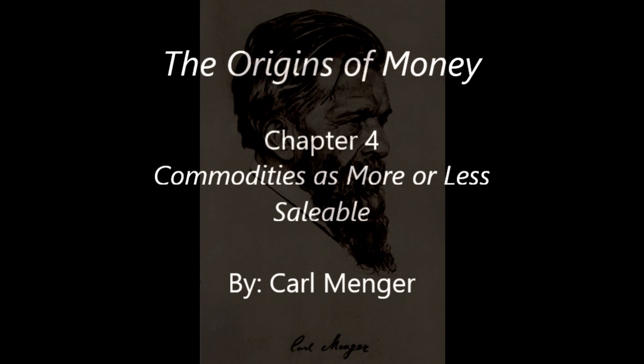The Origins of Money by Carl Menger, Chapter Four: Commodities as More or Less Saleable. It is an error in economics as prevalent as it is patent that all commodities at a definite point of time and in a given market may be assumed to stand to each other in a definite relation of exchange — in other words, may be mutually exchanged in definite quantities at will. It is not true that in any given market ten hundredweight of one article equals two hundredweight of another, which equals three pounds of a third article, and so on.